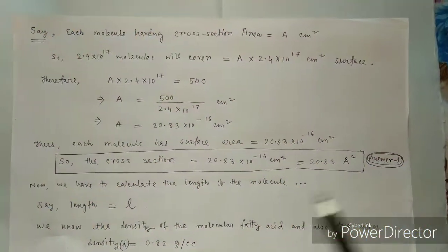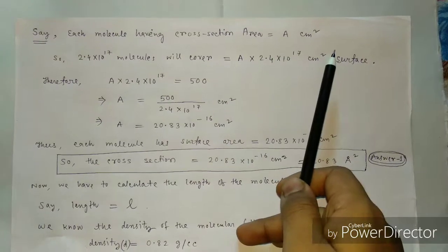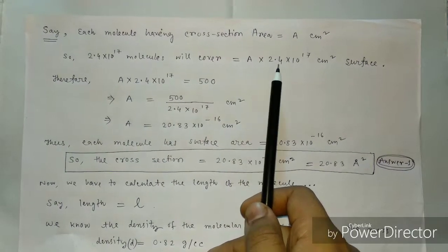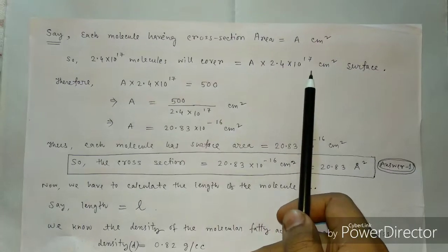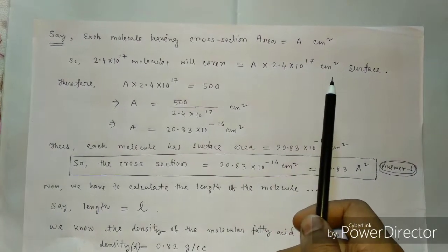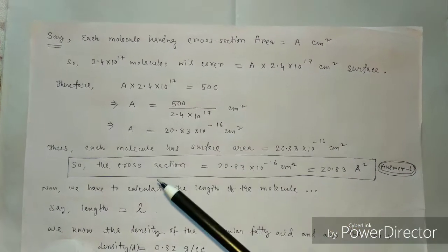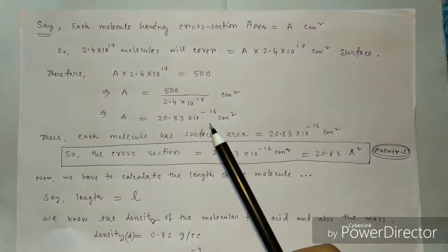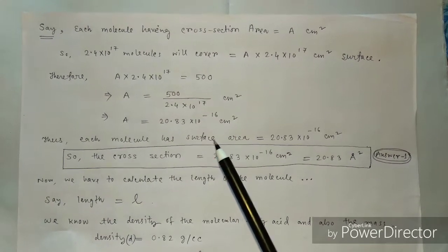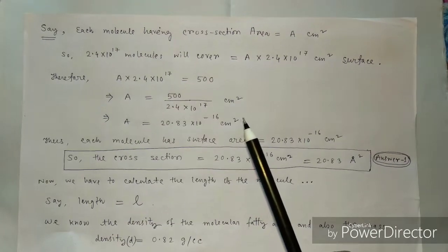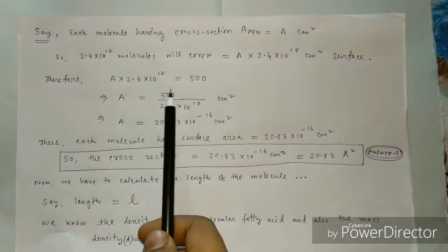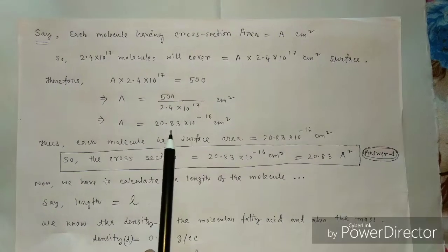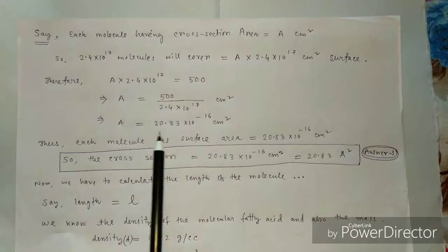Now say each molecule has a cross-section area capital A cm². Then 2.4 × 10¹⁷ molecules will cover a total surface area of A × 2.4 × 10¹⁷ cm². We know that 0.102 × 10⁻³ grams of molecules cover 500 cm². Therefore: A × 2.4 × 10¹⁷ = 500.